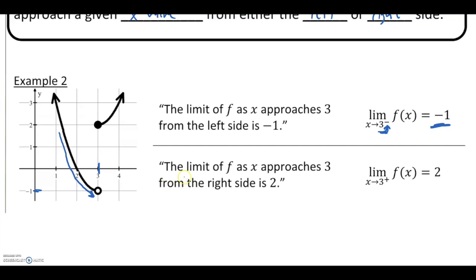Looking at the right side — notice our change in notation. The limit of f as x approaches 3 from the right side, we're saying this one is 2. When I look from the right side and trace along that, it sure looks like if I focus on this part of the graph I would be approaching a y value of positive 2. Notice the notation: taking that 3 and raising it to a positive sign — again, it's not really an exponent, it's not saying positive 3, it's saying approach 3 from the right side.